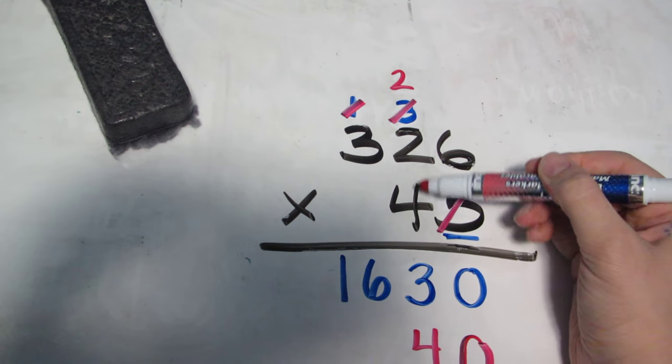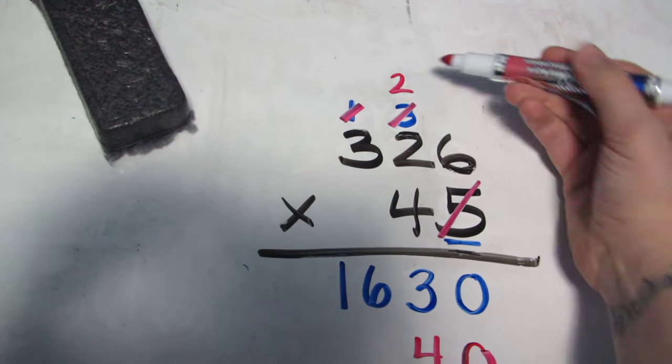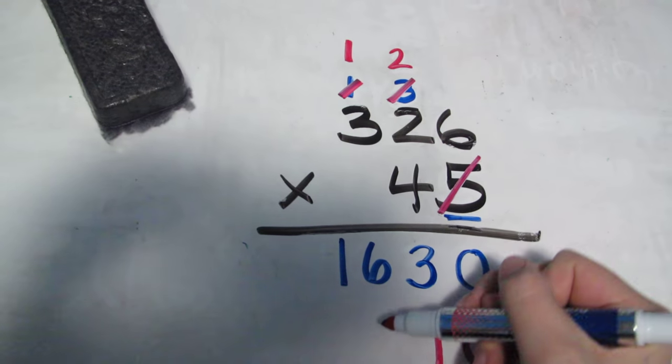Then I'm going to do 4 times 2, 8, plus 2 is 10, 1, 0.